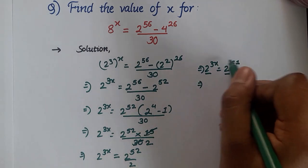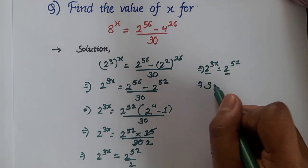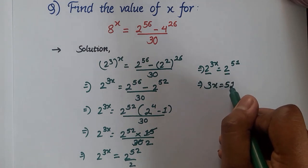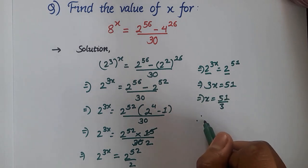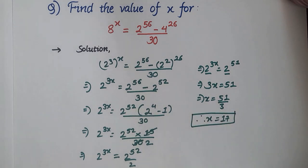The bases are same here so their powers will also be equal to each other. So we have 3x = 51. This gives us x = 51/3, therefore x will be equal to 17, and that's our answer.